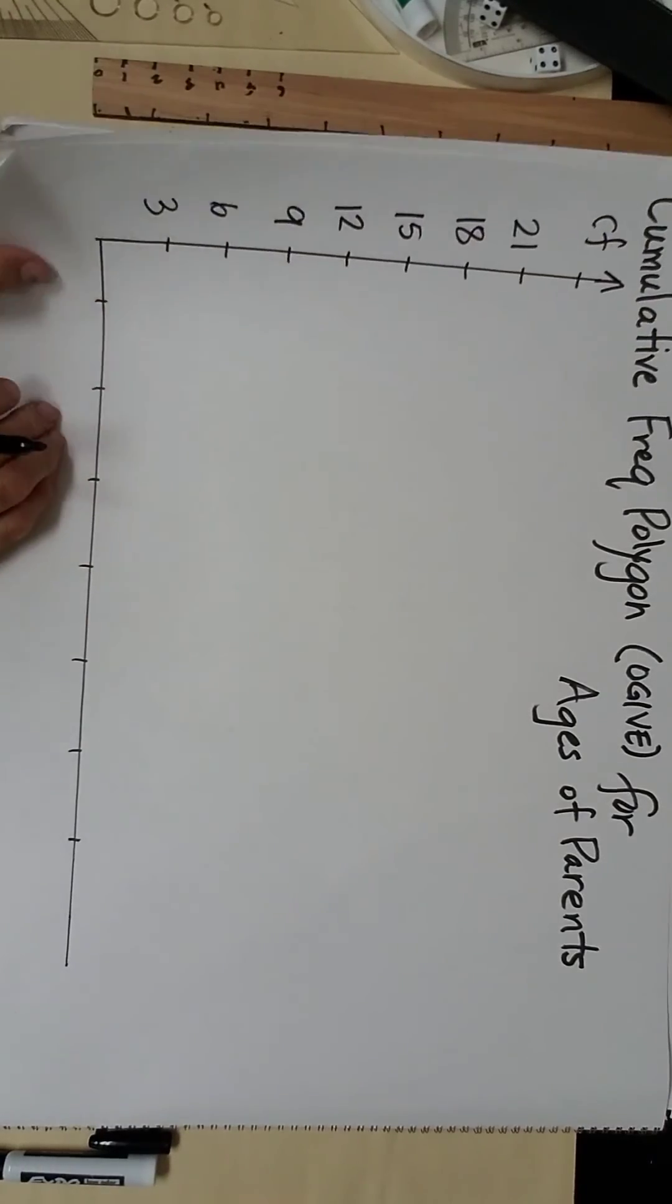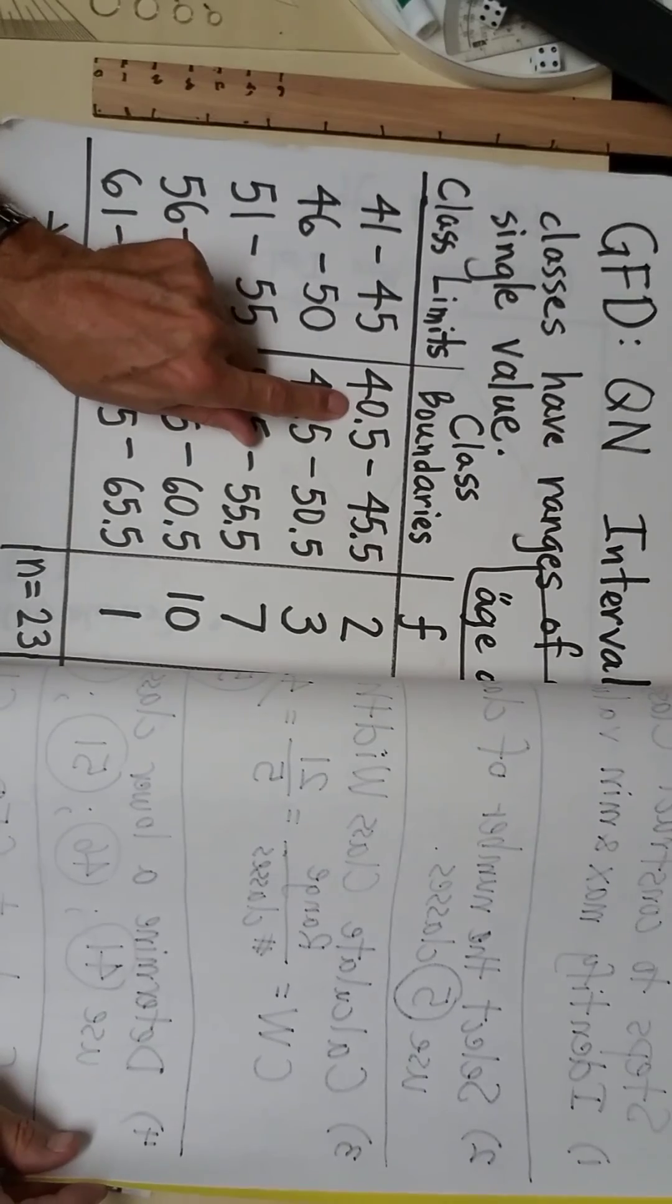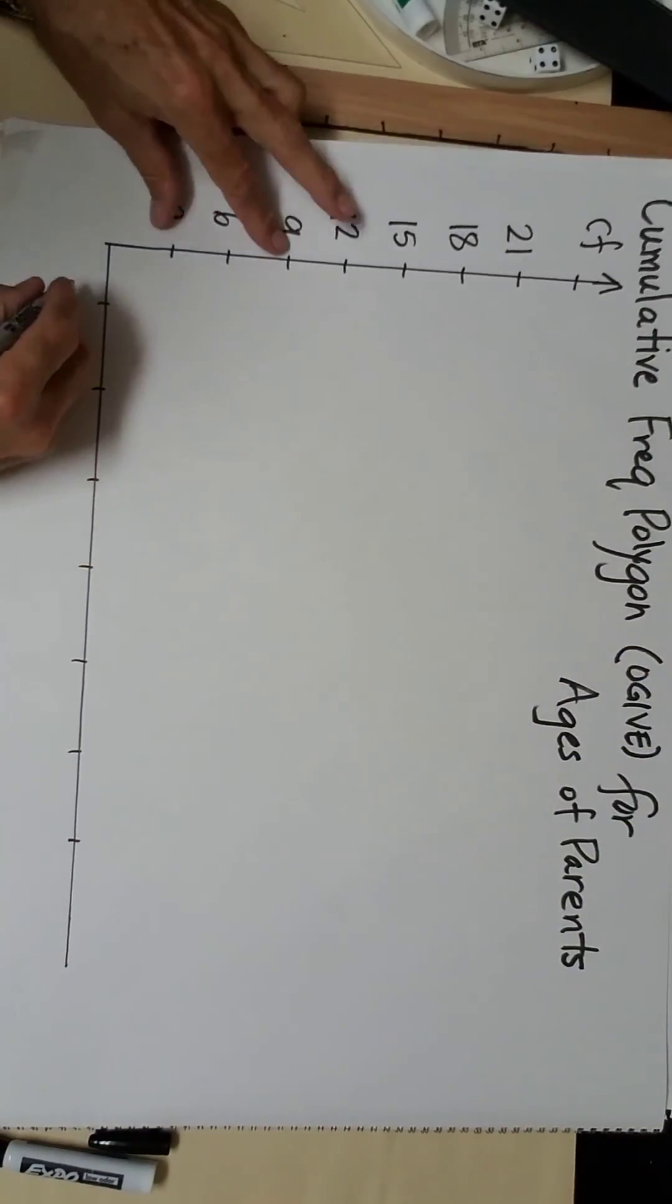A difference on this graph, though. Your first class boundary is 40.5.